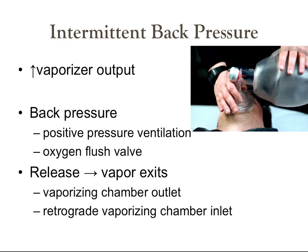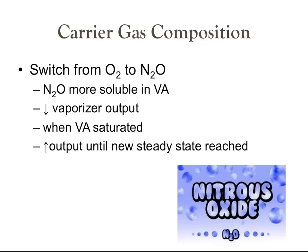Intermittent back pressure increases vaporizer output. When pressure is suddenly released during exhalation or expiration in positive pressure ventilation, vapor exits the vaporizing chamber via both the vaporizing chamber outlet and retrograde through the vaporizing chamber inlet. The output resistance of the bypass chamber is lower than that of the vaporizing chamber. Carrier gas composition — mainly switching from oxygen to nitrous oxide — also affects output. Nitrous oxide is more soluble in volatile anesthetics, which decreases vaporizer output. When the volatile anesthetic becomes saturated, output increases until a new steady state is reached.